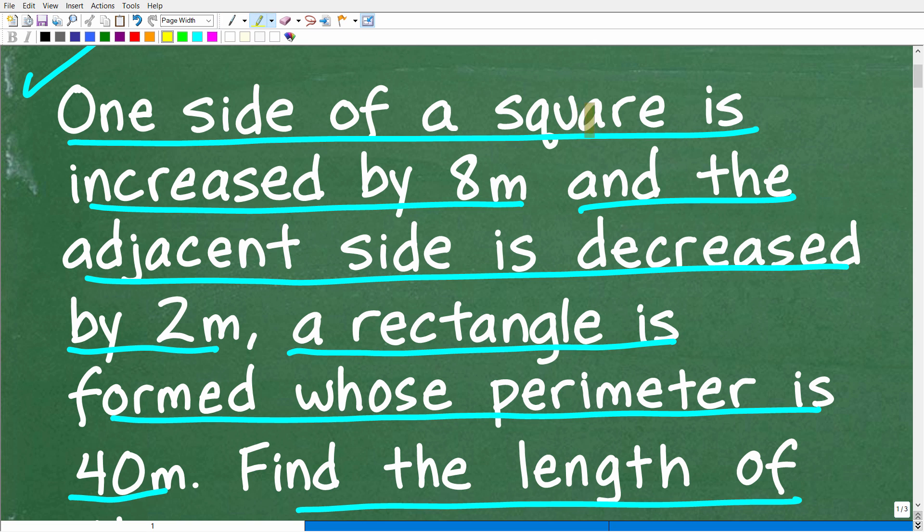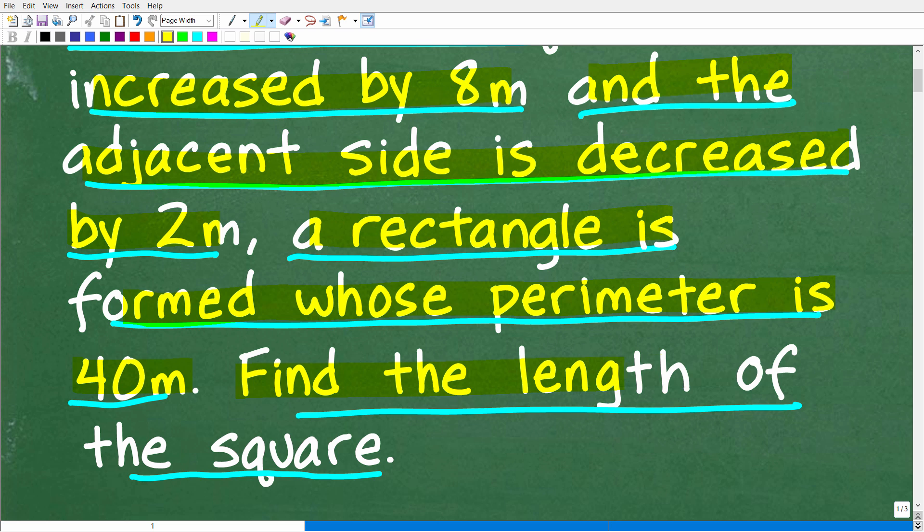All right, so we have a square, and we're going to take this square and turn it into a rectangle. And the way we're going to do that is one side of the square is going to be increased by 8 meters, and the adjacent side is going to be decreased by 2 meters. So we have this rectangle that is formed whose perimeter is 40 meters. And the question is, we want to find the length of the original square.